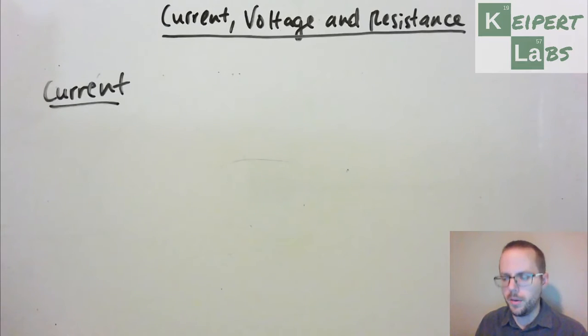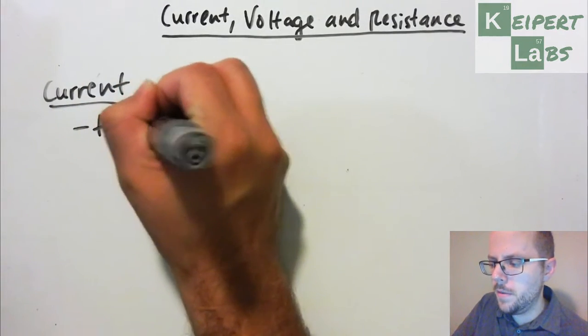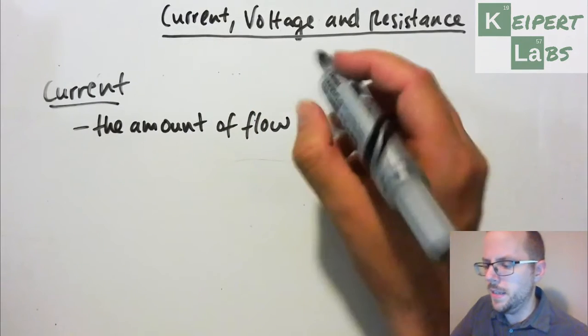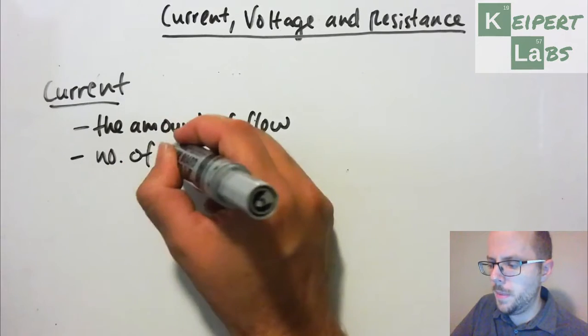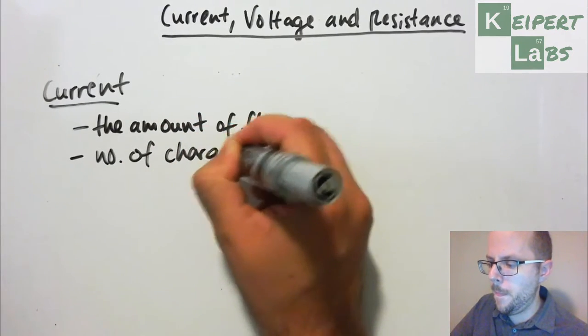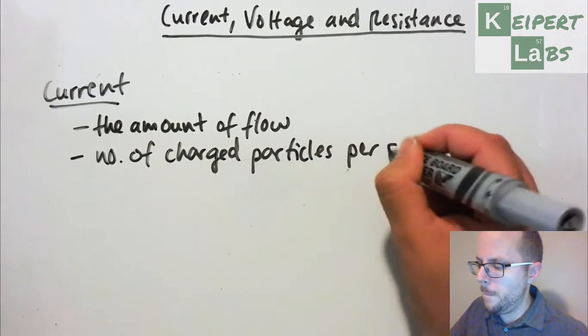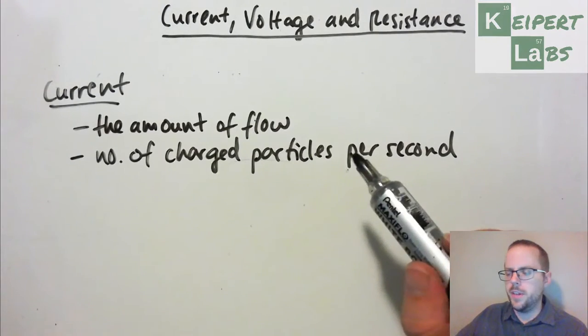So let's start off by thinking about current. Perhaps one of the easier ones for us to understand when we're thinking about electricity. When we're thinking about current we're thinking about the amount of flow. That is, essentially we're thinking about the number of charged particles per second.